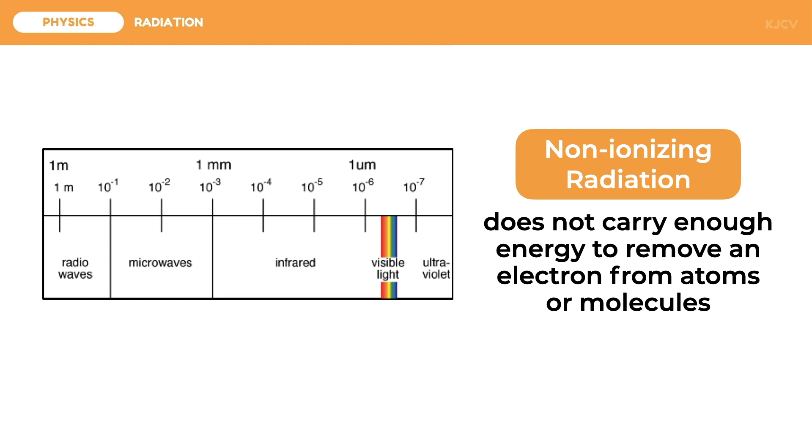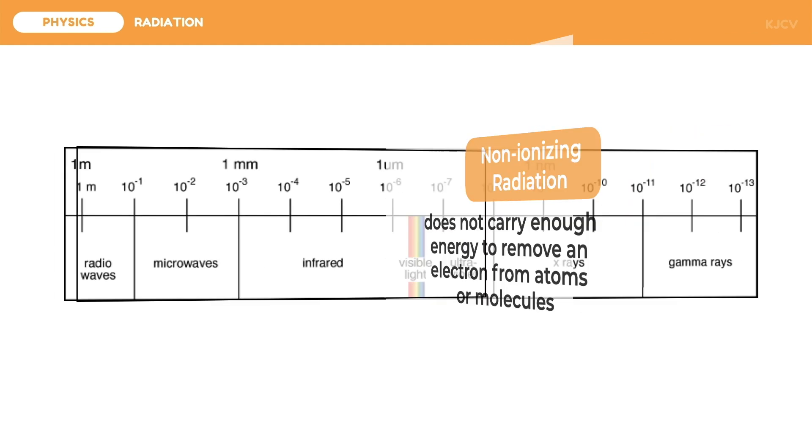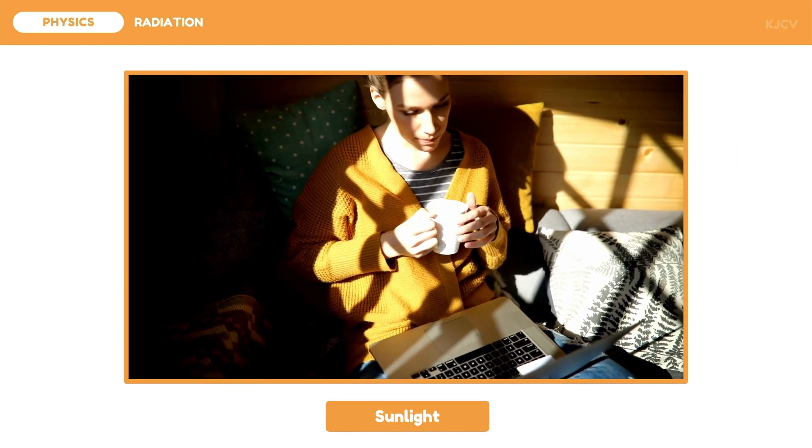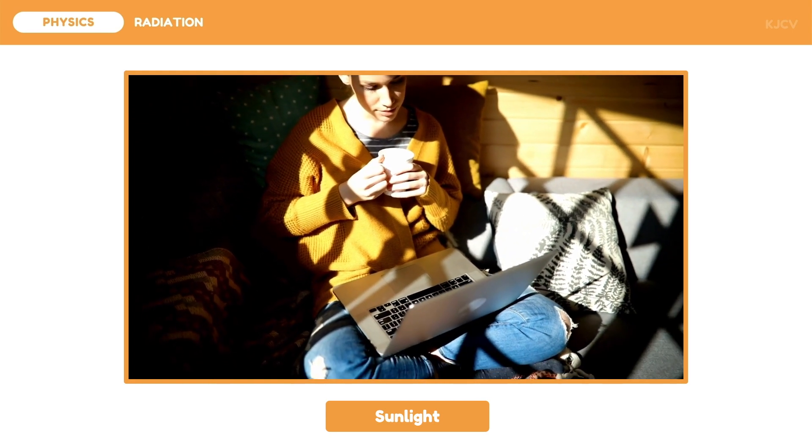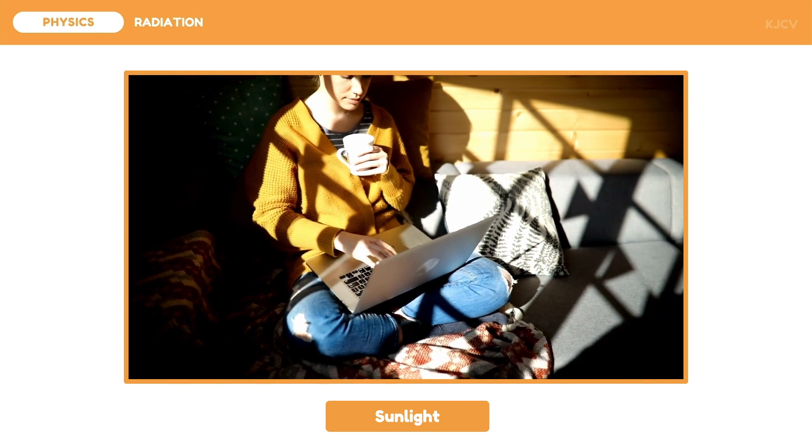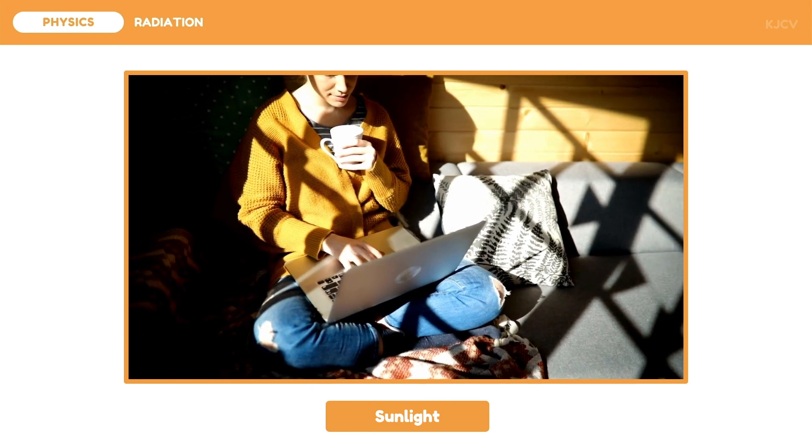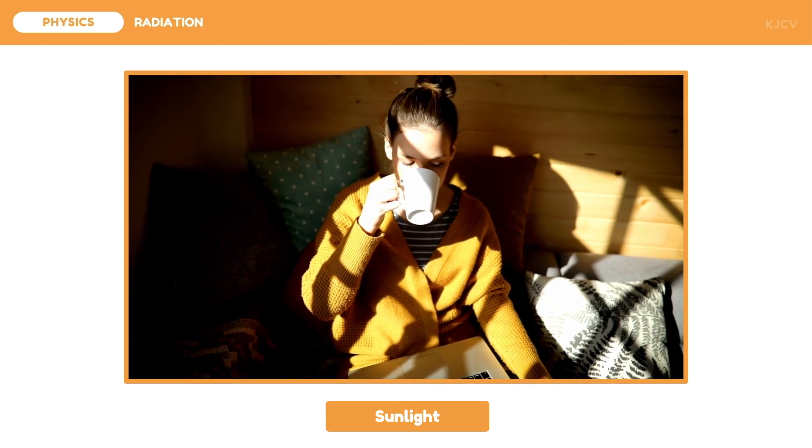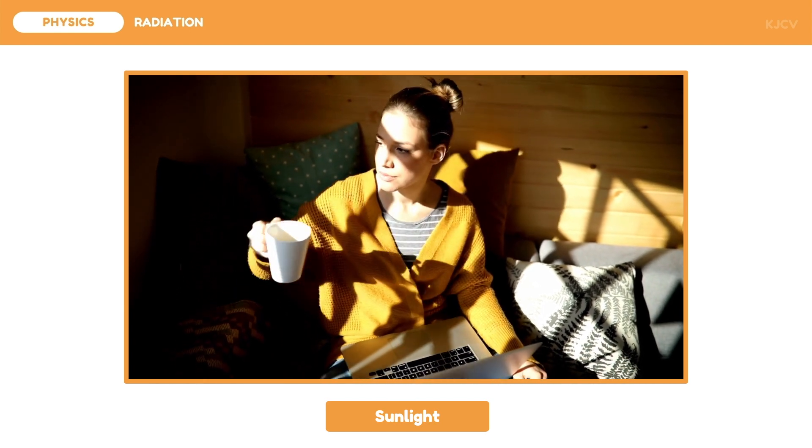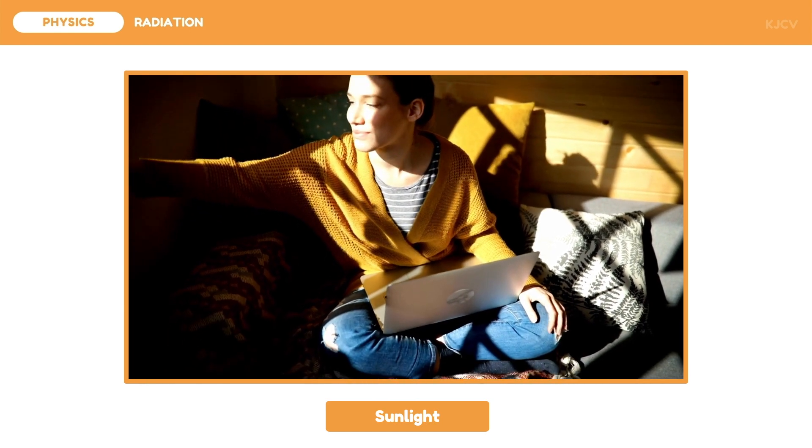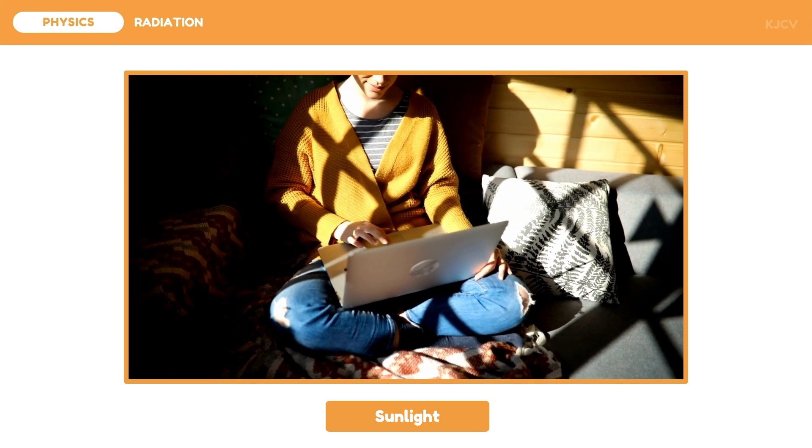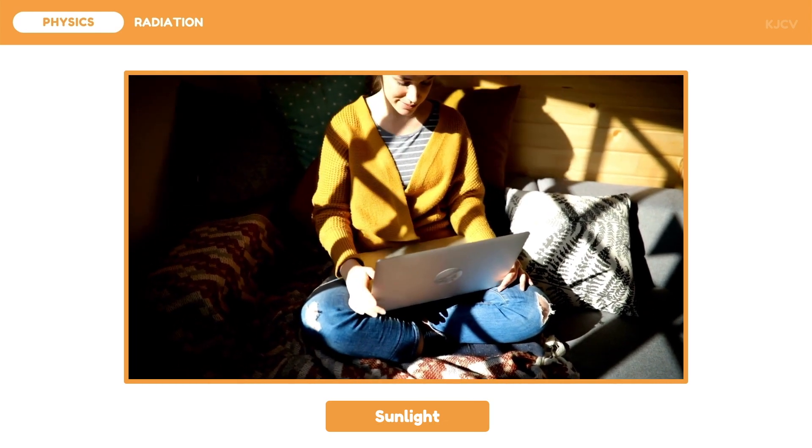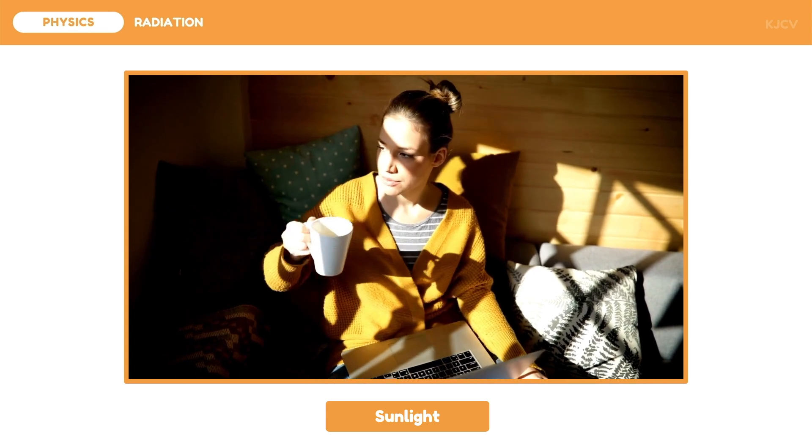Thus these EM radiations are non-ionizing. The sunlight is composed of three different UV radiation: UVA, UVB, and UVC. Generally the sunlight is non-ionizing since it triggers the synthesis of vitamin D and tanning.